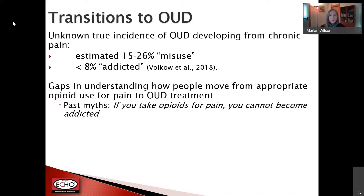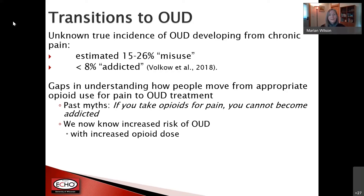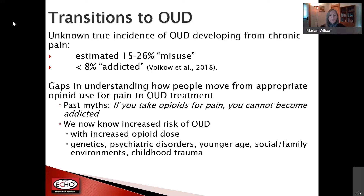We were taught to tell patients that if you take opioids for pain, you can't become addicted. Now we know that's probably not true. We know there's an increased risk of opioid use disorder with increased opioid dose, and that variables like genetics, comorbid psychiatric disorders, younger age, social and family environments, or childhood trauma can also increase the risk of developing opioid use disorder if you have pain.